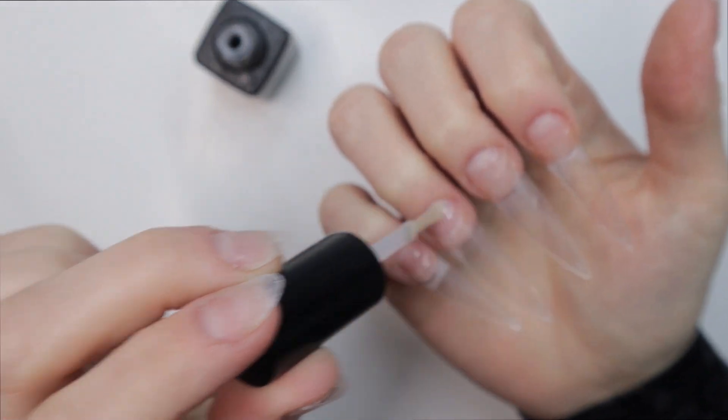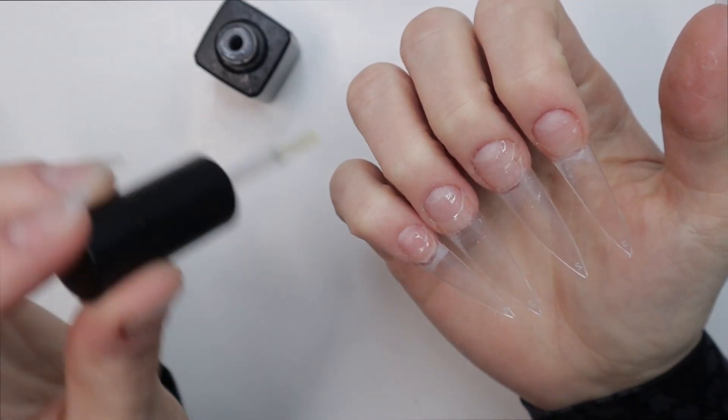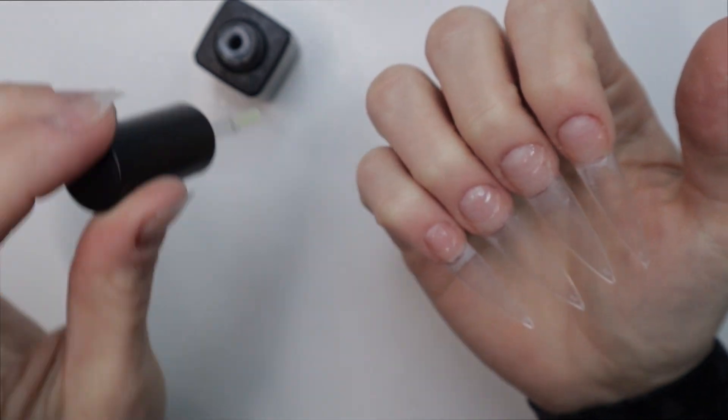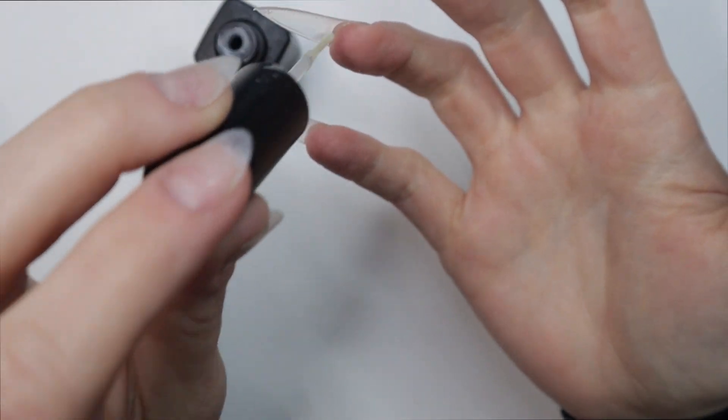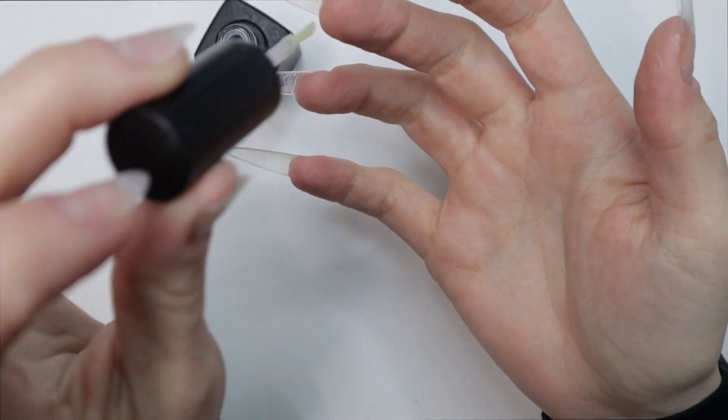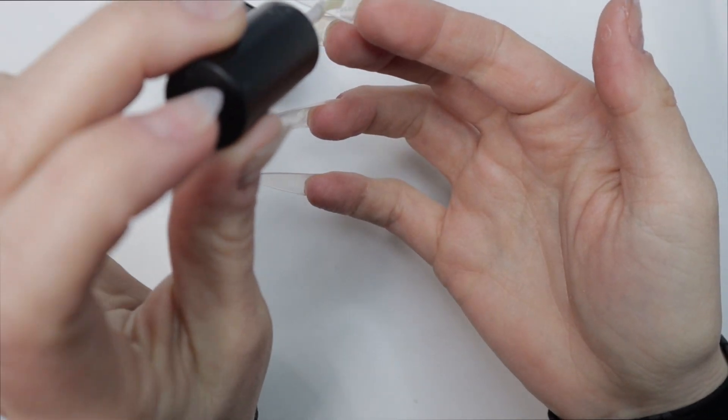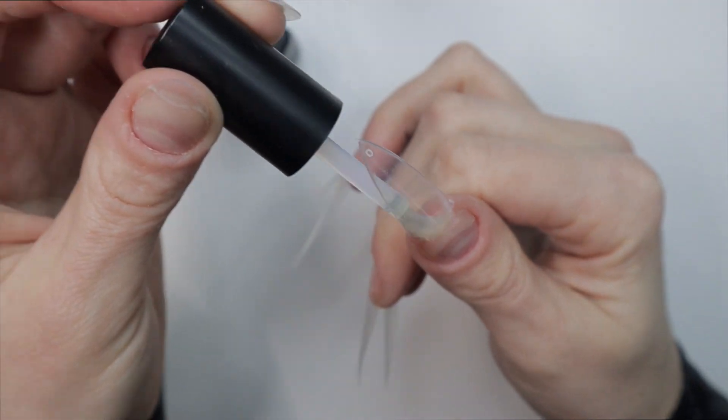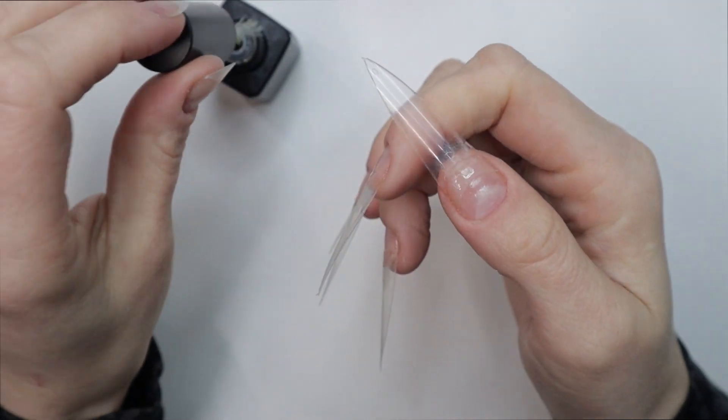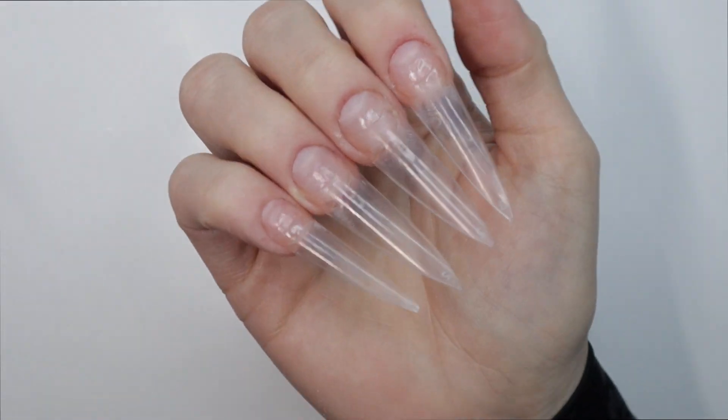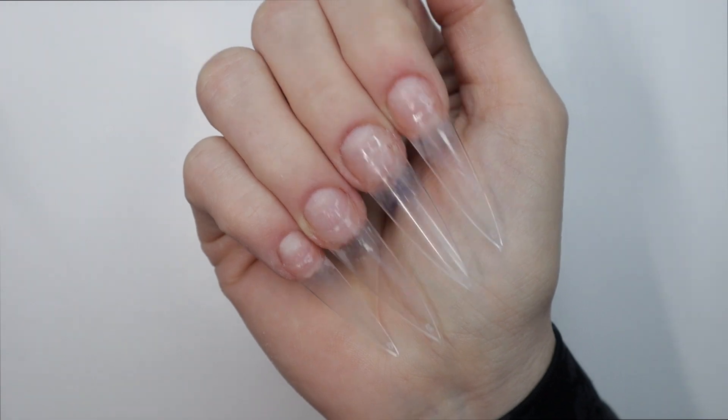So regardless of what nail glue you use, the resin activator will harden and cure that nail glue instantly. I also like to dab it on the underside of my tip where the glue and the natural nail meets, and that makes it harden really fast. So if you have a slow drying nail glue, this might help you get faster drying results.